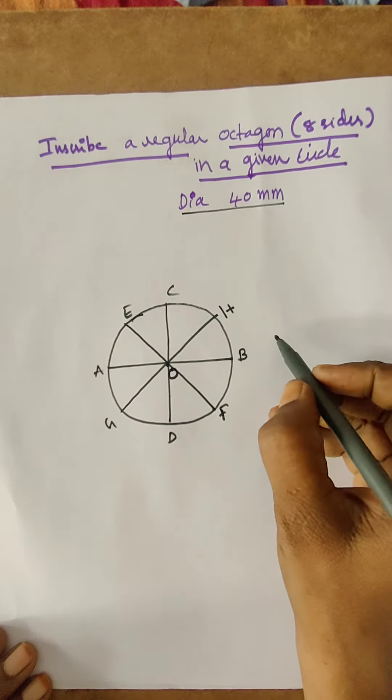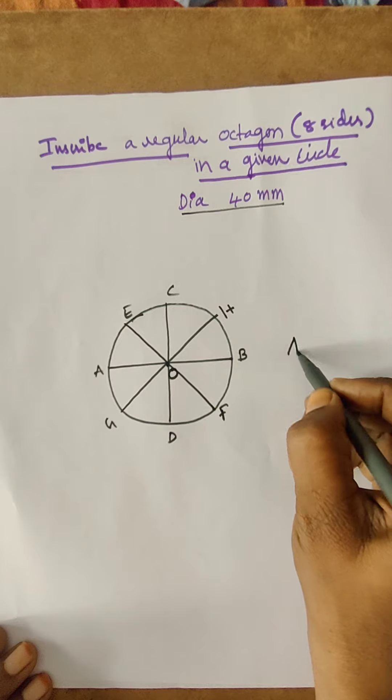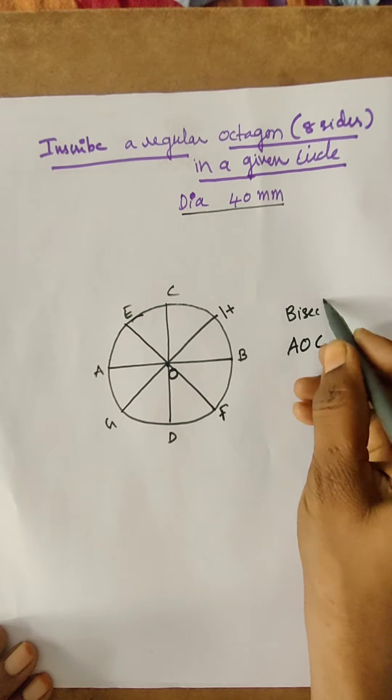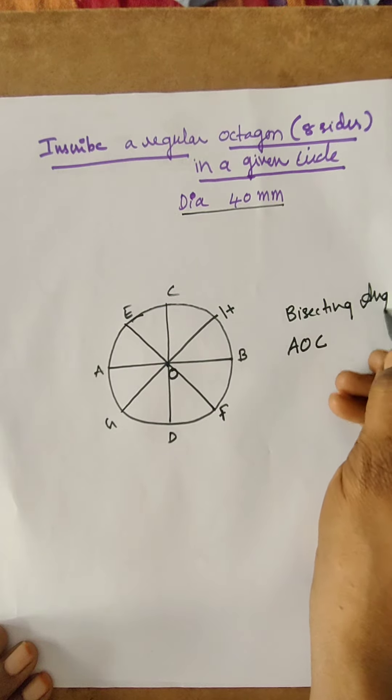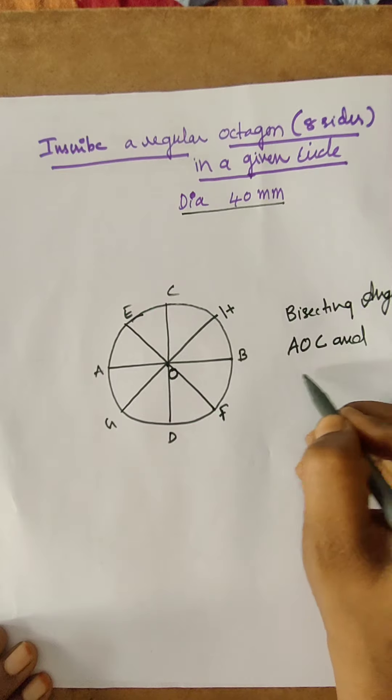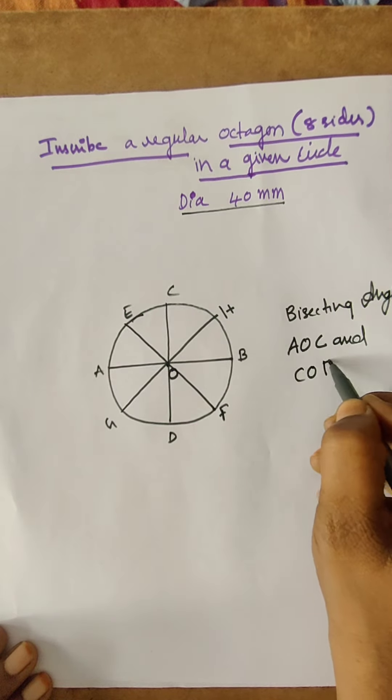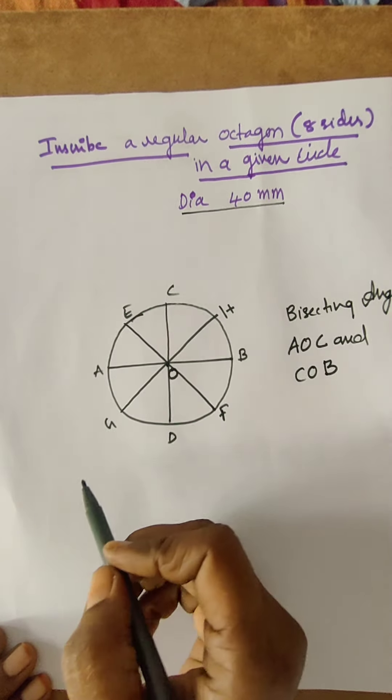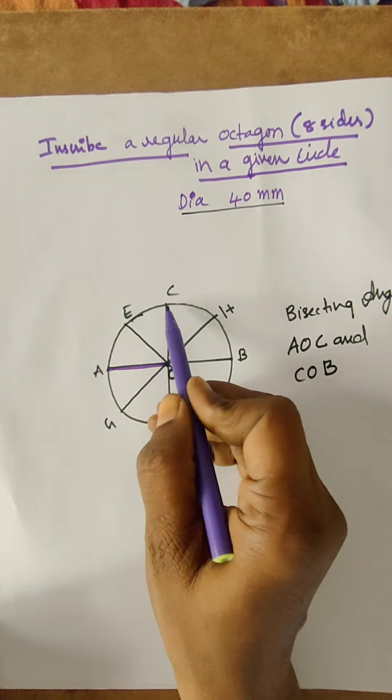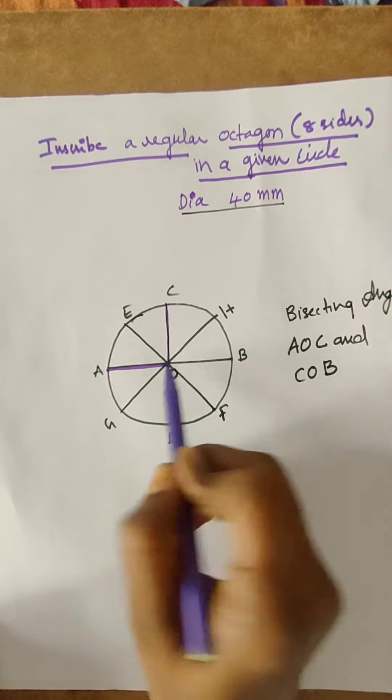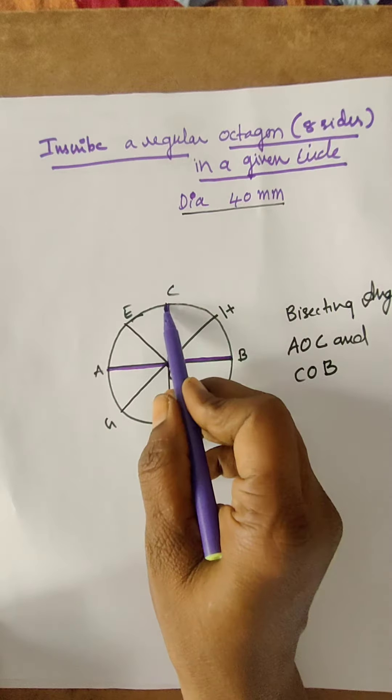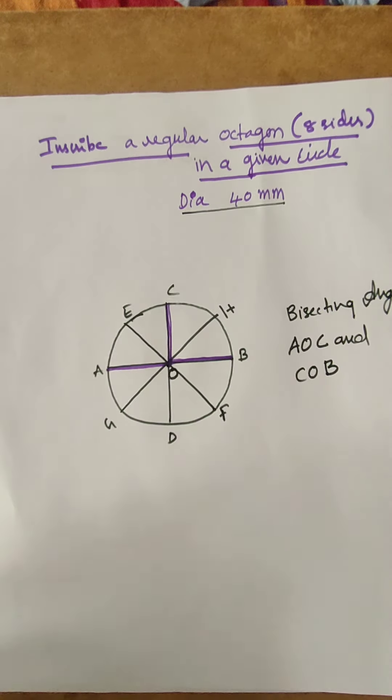Bisecting angles, bisecting angles AOC and COB. Angle AOC, angle COB. These two are the bisecting angles.